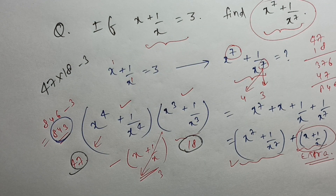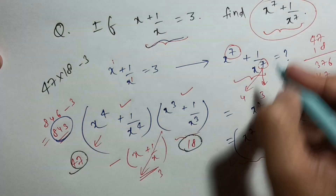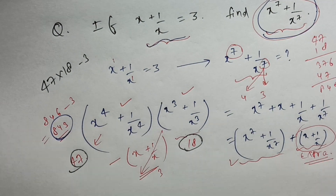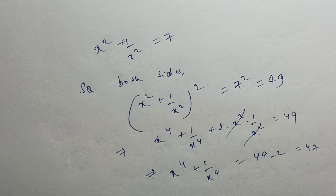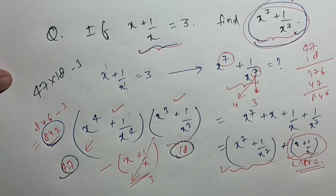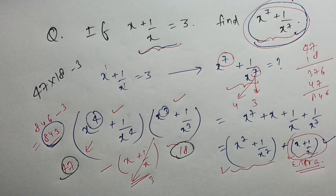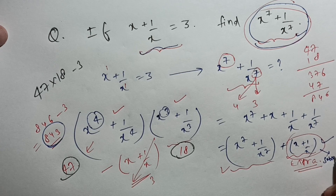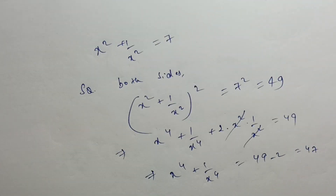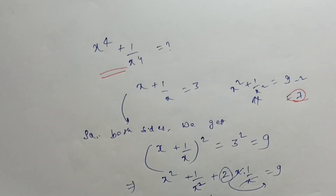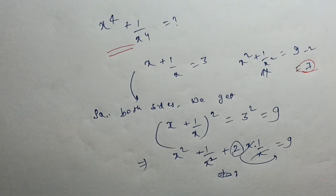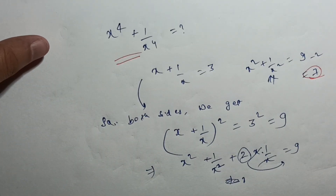This was a slightly long question with lots of calculations. To quickly recap: we were given x plus 1 by x equal to 3 and had to find x raised power 7 plus 1 upon x raised power 7. We split the 7th power into 4th and 3rd powers, found x square plus 1 by x square, then x raised power 4, and x cube separately, then combined and subtracted. This is how we can solve such questions. Thank you.